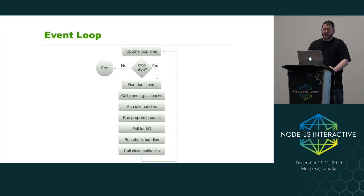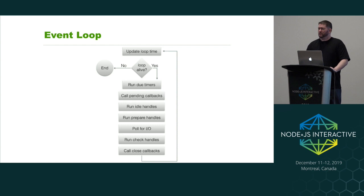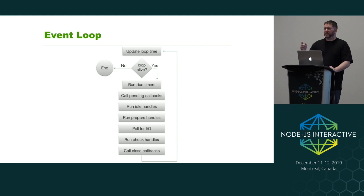From there it goes to pending callbacks — your Node.js callbacks that are ready to run. Next it processes idle handles, which get processed every time through the event loop. Then we do prepare handles, which give you a hook into the event loop if you want to do anything before polling for IO. Then we move into the actual IO polling. When we come out of that we have check handles — the inverse of the prepare handle — giving you a good way to hook into your event loop. Finally, any closed callbacks outstanding are executed, and then we loop all the way back to the top.